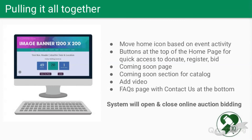Let's talk about pulling it all together. You can move your home icon based on your event activity, put buttons at the top of a home page for quick access to donate or register, add a coming soon page or a coming soon section for your catalog, and we showed you a couple of different ways to add video. Some groups will add a custom page for a frequently asked questions page with a contact us at the bottom. And you don't have to worry about the online auction bidding — the system will open and close that automatically.